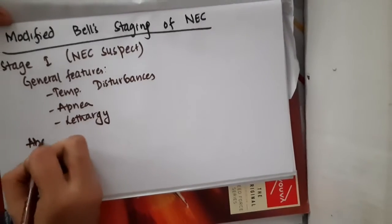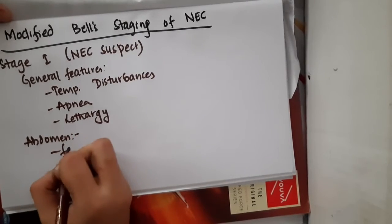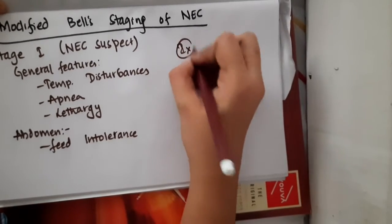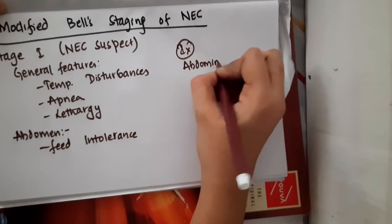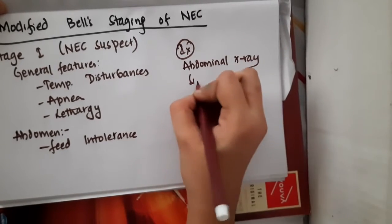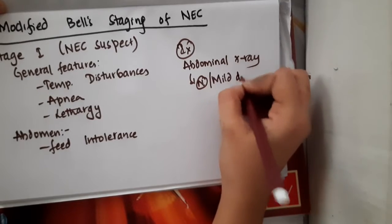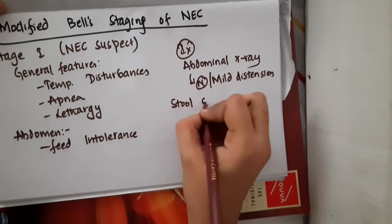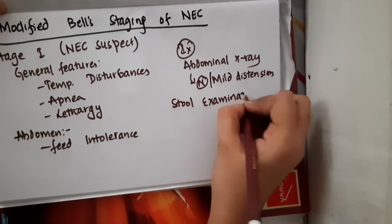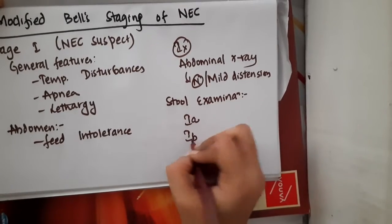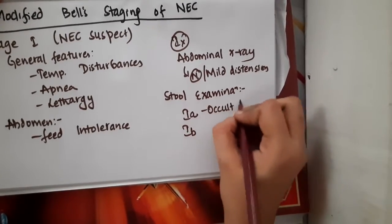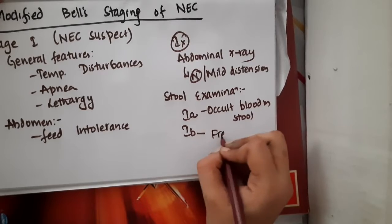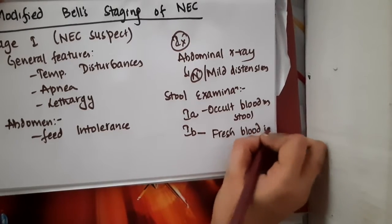In the abdomen, the baby has feed intolerance. On abdominal x-ray, you see normal or mild distension. Based on stool examination, stage 1 is divided into 1A, where occult blood is seen, and 1B, where fresh blood is seen in the stools.